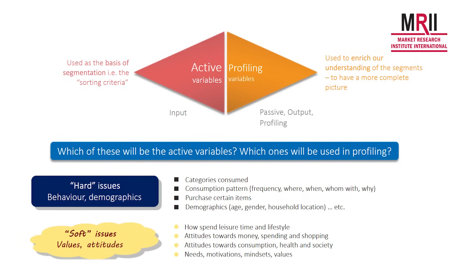In terms of how a segmentation is constructed, we have two types of variables we're interested in. The first we call active variables — these are the variables, or information from the survey, that we use to actually create the segmentation. They're the input variables. We will also have a set of profiling variables which allow us to understand a bit more about the segments once we've created them.